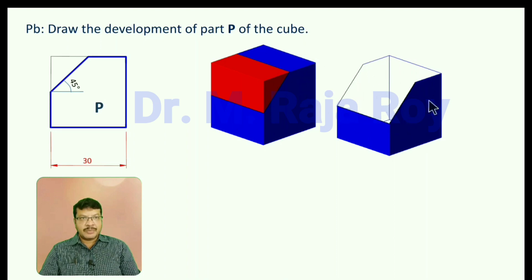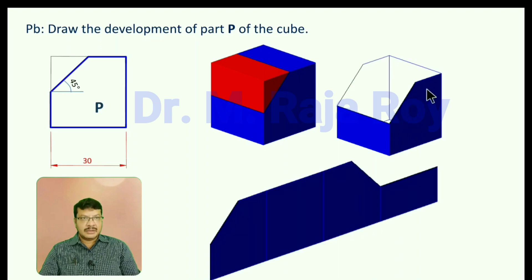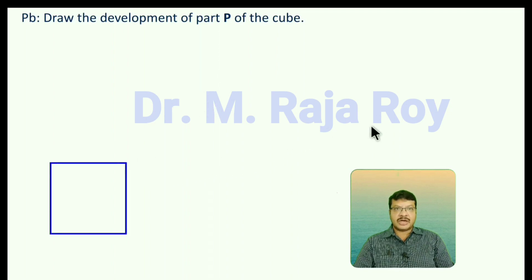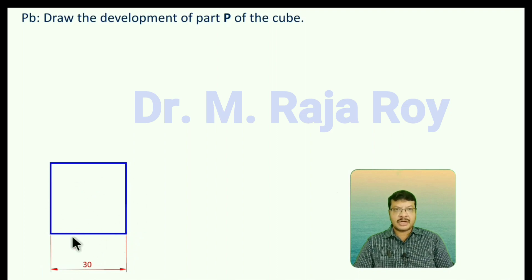If you keep all the surfaces one adjacent to the other, it will be like this — each surface corresponds to a face of the cube. Now I will explain the procedure to draw that part shown in the figure. You first start with the top view. In the top view, we have to draw the square because it is a cube — it will appear as a square of side 30. Call the top base corners A, B, C, D.